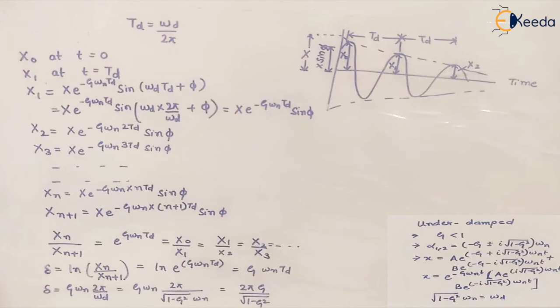Let's assume that this is the plot we have made between the displacement, the amplitude, and the time period. These are two successive oscillations, and we can see that the amplitude of the oscillations is decreasing. The time taken between any two successive oscillations is given by TD, and it remains the same for any two successive oscillations.